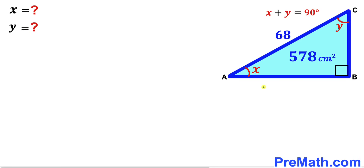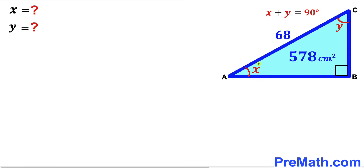Welcome to Pre-Math. In this video we have a blue shaded right triangle ABC. The area of this triangle is 578 square centimeters, the hypotenuse is 68 centimeters, angle BAC is represented by x, and angle ACB is y. Bear in mind that x and y are complementary angles.